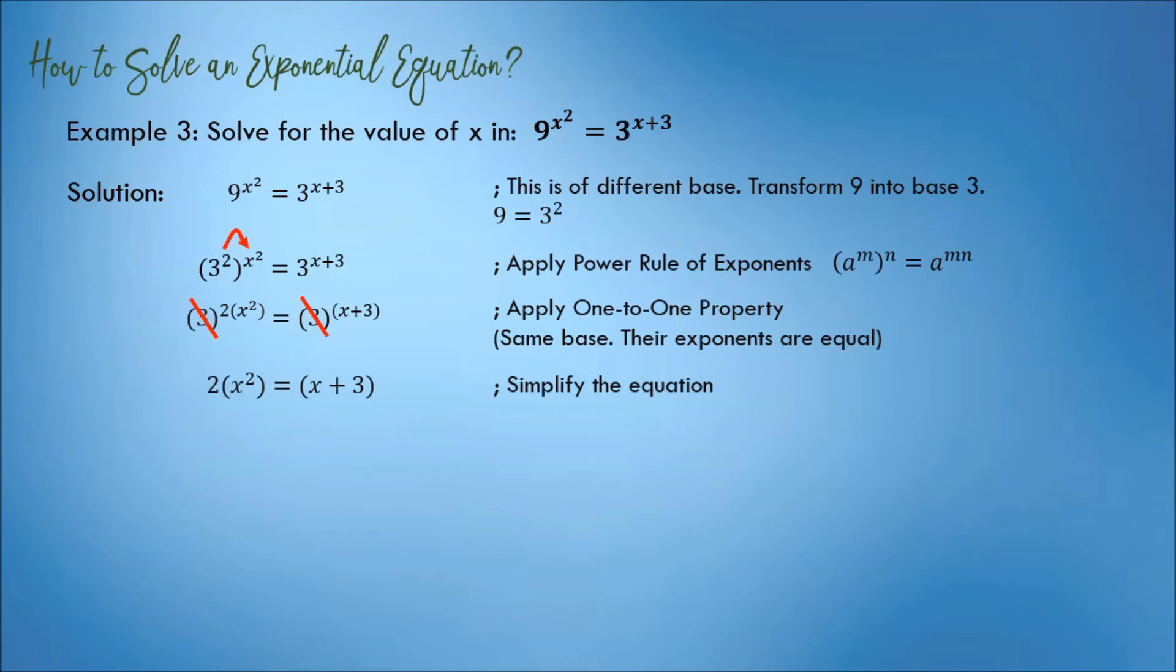Simplify the equation. The left side will become 2x squared. The right side remains x plus 3. Transpose x plus 3 to the left to form a quadratic equation.